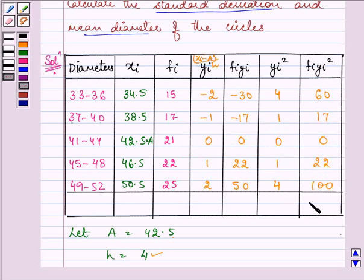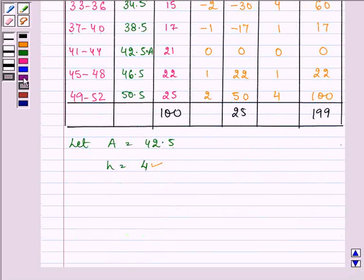Now, we need to sum them. So here, the sum comes out to be 99, whereas here it is 25 and the sum of all the frequencies are 100. Now, we need to find out mean as well as the standard deviation.